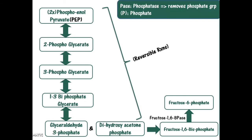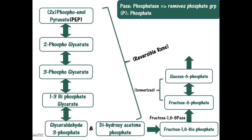Similarly, the step converting glucose-6-phosphate into glucose is mediated by a new enzyme, glucose-6-phosphatase, where we remove the phosphate group present on carbon number 6 of glucose-6-phosphate to form the glucose molecule.